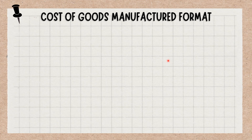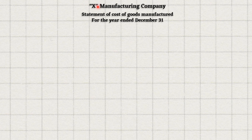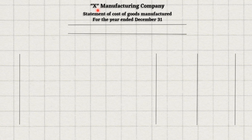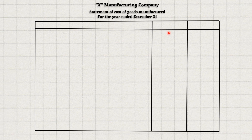To calculate the cost of goods manufactured, you can use a simple format. By following this format you will be able to do any kind of math related to cost of goods manufactured. Here we are taking an imaginary firm named X Manufacturing Company. We will create a box with two columns for writing amounts, and in this box we will calculate every cost related to production.